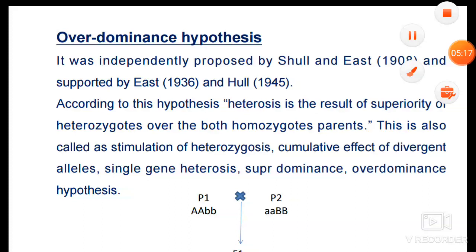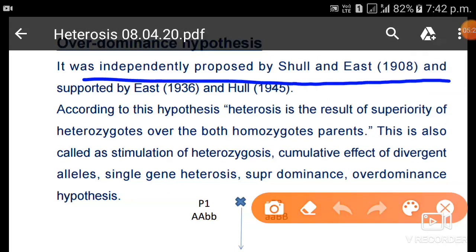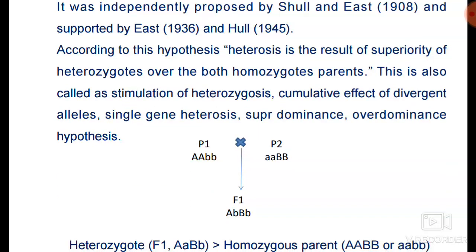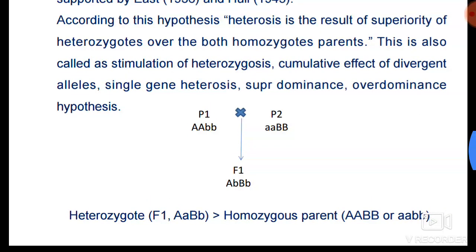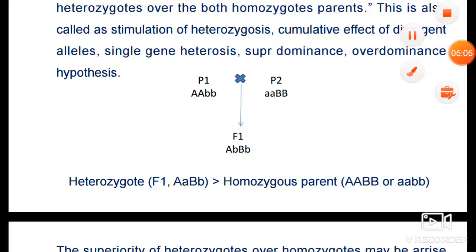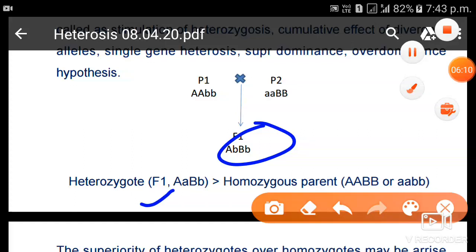The second is the over-dominance hypothesis, proposed by Shull and East in 1908 and supported by East in 1936 and Hull in 1945. According to this hypothesis, heterosis is the result of the superiority of heterozygotes over both homozygous parents. It is also called stimulation of heterozygosis, cumulative effect of divergent alleles, single-gene heterosis, super dominance, or over-dominance. The greater the number of heterozygous loci, the more superior the F1 will be.